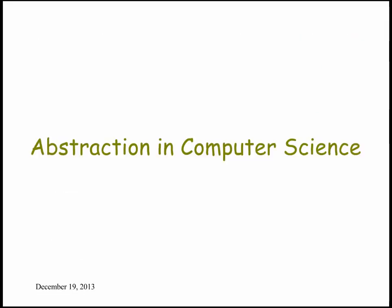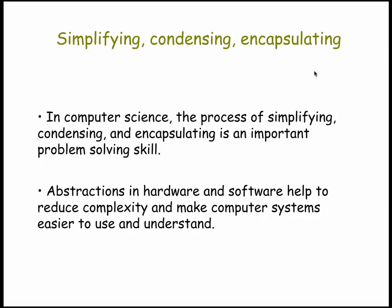How about in computer science? What we've seen in the previous examples is that abstractions are made by a process of simplifying, condensing, and encapsulating features into an artifact — like a map or a model airplane — that represents something much more complex. This is an important problem-solving skill in computer science. Abstractions are used in hardware and software to help reduce the complexity of our systems and to make them easier to use and understand.